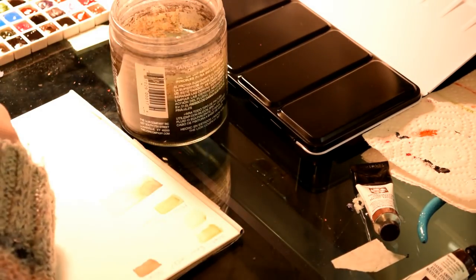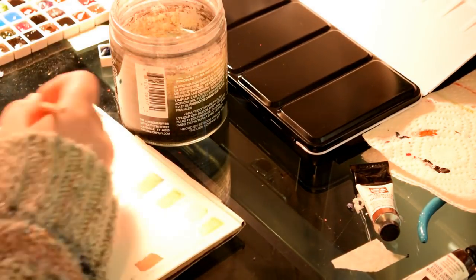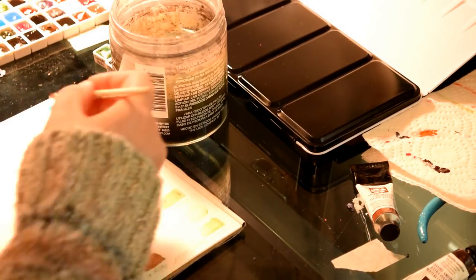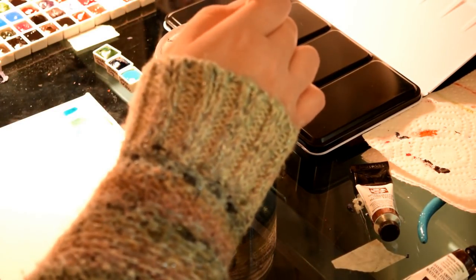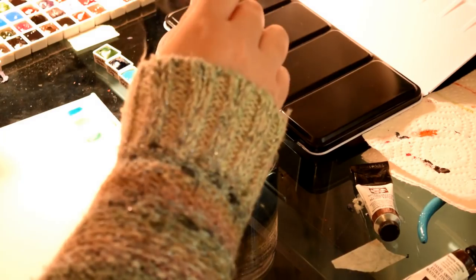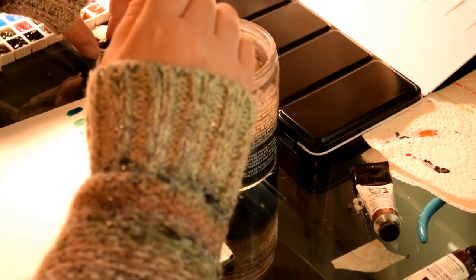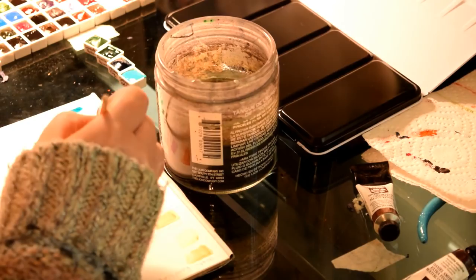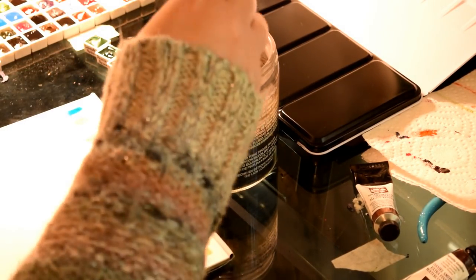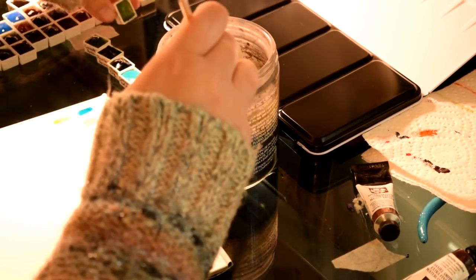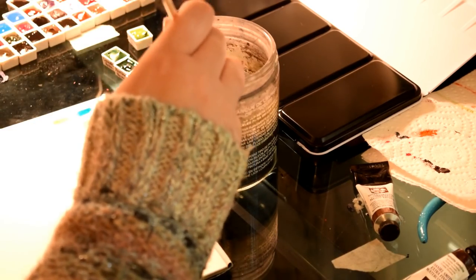So the next step is to get some scrap paper and start swatching all the colors that you've put into pans in order to decide which ones you'll put into your folding palette box.